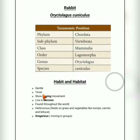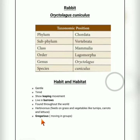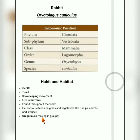They are timid animals — that is, easily frightened organisms. Normally they show leaping movement, that is their movement is such as jumping. They live in burrows and are found all over the world. Normally these are herbivores — they eat vegetables and grass. Rabbits are gregarious, meaning they move in groups. Learn this term for your exam.